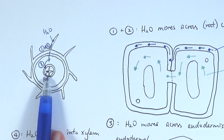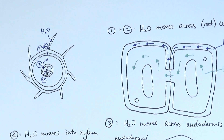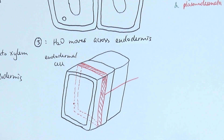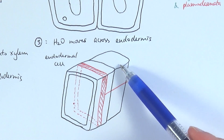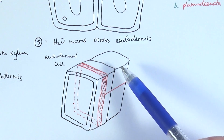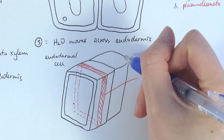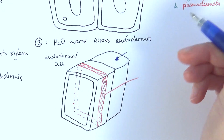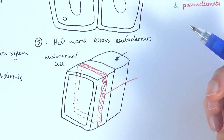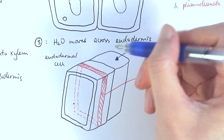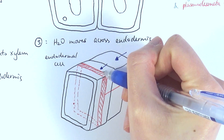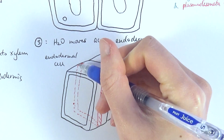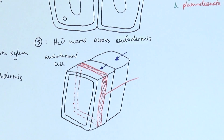The endodermis has a very specific structure. In step three, the water moves across the endodermis — we need to know specifically how it does that. This first cell is a 3D drawing of an endodermal cell, and the adjacent cell is from the cortex, not the endodermis. The water is coming in from the root hair cell side, traveling through the apoplast pathway, still in the cell wall. But embedded within the cell wall of the endodermal cell is a wrapping structure called the Casparian strip.